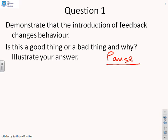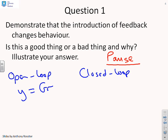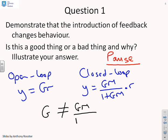First then it says demonstrate that the introduction of feedback changes behavior. Well in the open loop we had y equals gr. In the closed loop we had something of the form y equals gm over 1 plus gm into r. And clearly g is not the same as gm over 1 plus gm into r. So the closed loop behavior is not the same as the open loop behavior.